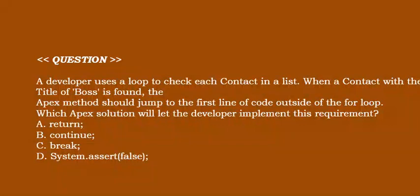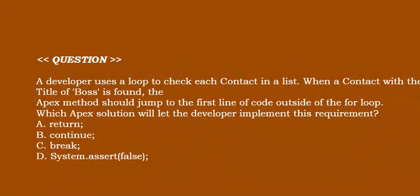A developer uses a loop to check each contact in a list. When a contact with the title of boss is found, the Apex method should jump to the first line of code outside of the for loop. Which Apex solution will let the developer implement this requirement? Option A: return. Option B: continue. Option C: break. Option D: System.assertFalse. Correct answer is Option C.